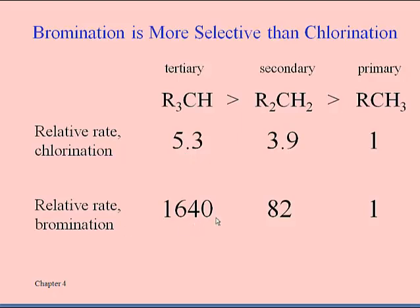What that means is for bromination, if you've got a chance to make a tertiary bromide you make that almost exclusively and hardly any of the other products. Sometimes that's a good thing because we may want to make a single product that we don't have to separate from a bunch of isomers. Even if there's a choice between secondary and primary positions for bromine, 82 to 1 is a very big preference for secondary. There are a couple of problems in the homework and answer keys that deal with this type of substitution.